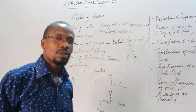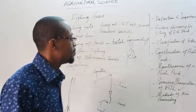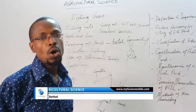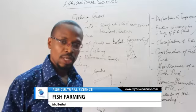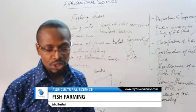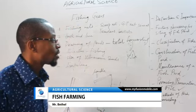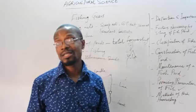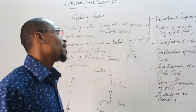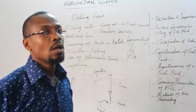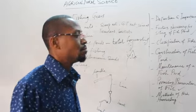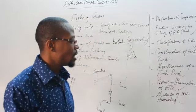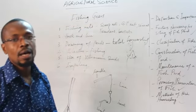We looked at the construction of a fish pond and its ten steps; the maintenance of a fish pond; and processing and preservation of fish — smoking, canning, salting, and sun drying. We have ended this topic by looking at the methods of harvesting fish using the various gears and implements.